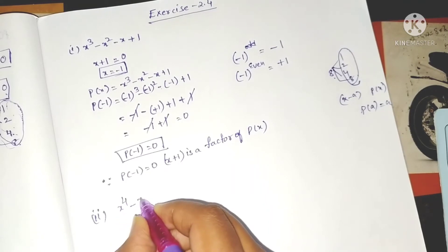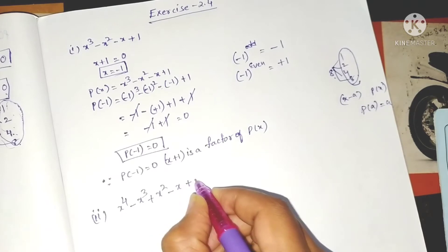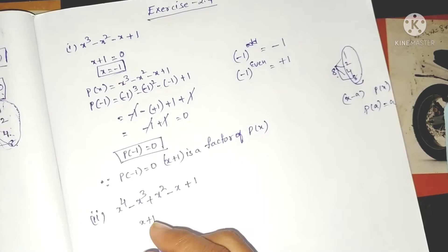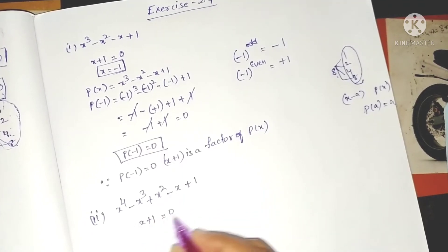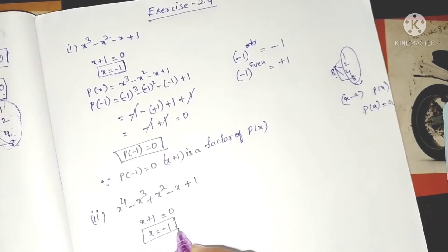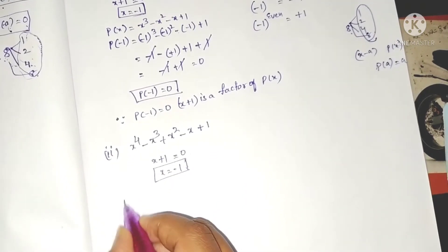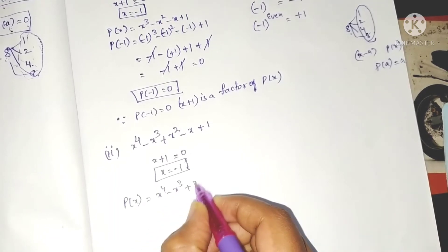Now the second problem: x to the power 4 minus x cubed plus x squared minus x plus 1. We have to check whether x plus 1 is a factor or not. Take x plus 1 equals 0, transpose to get x equals minus 1. Now substitute minus 1 in the given polynomial in place of x.